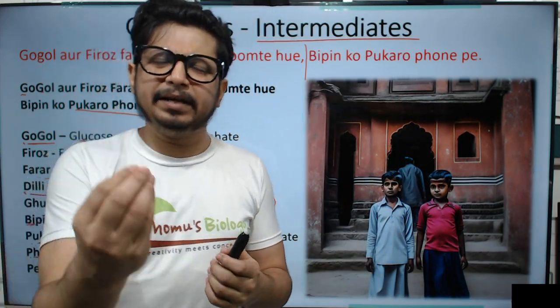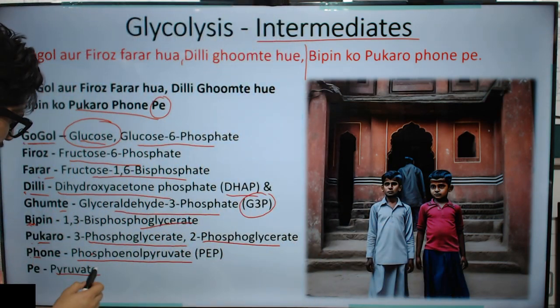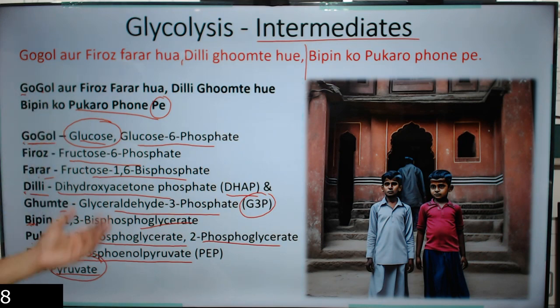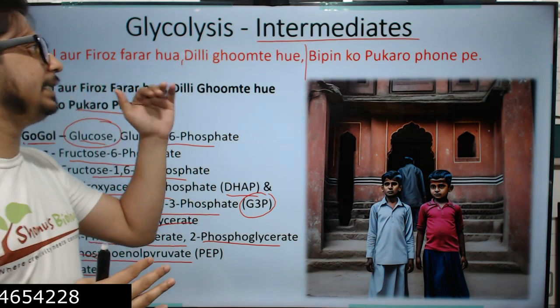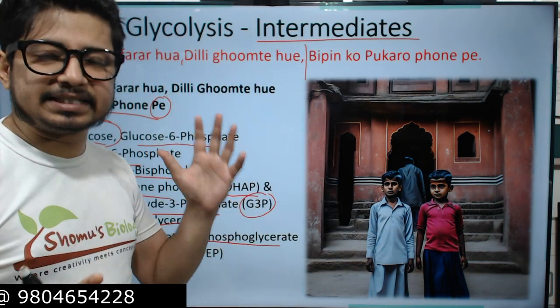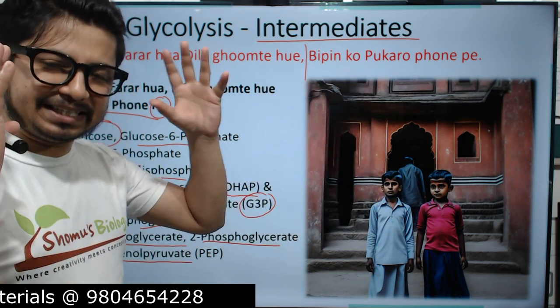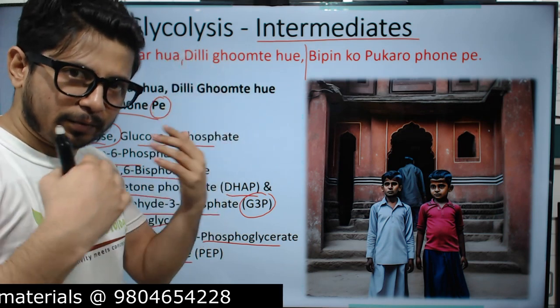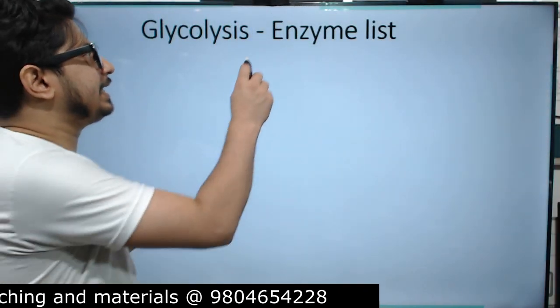And ultimately 'pe' — P for Pyruvate, the end product of glycolysis. Glycolysis begins with glucose and ends in pyruvate, and this is clearly visible in the mnemonic. If you remember 'Gogol or Feroz farar hua, Delhi ghunte huye, Vipin ko pukaro phon pe,' you will clearly understand and remember all the intermediates of glycolysis.